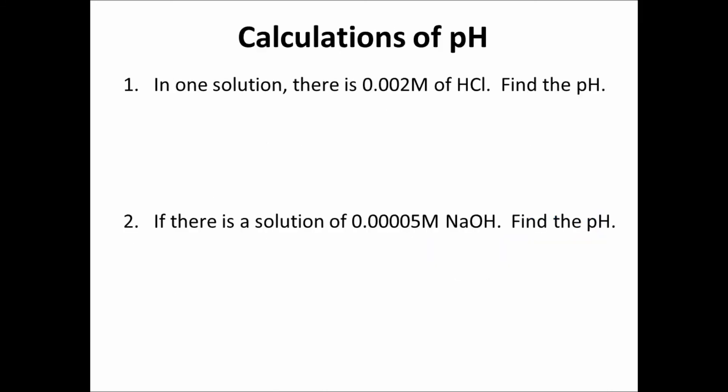So let's look at some calculations of pH. The first problem says, in one solution, there is a 0.002 molar solution of HCl. Find the pH. Well, I know my hydrogen ion concentration because it tells me that I have HCl, that is an acid, that is a substance that produces hydrogen ions. I know that the concentration that I've been given is not my hydroxide ion concentration. That wouldn't make any sense. It is my hydrogen ion concentration. And if I know my hydrogen ion concentration, I can find my pH because I know the equation is pH equals negative logarithm of hydrogen ion concentration. So if I plug that into my calculator, I will get a pH of 2.70 for this solution.